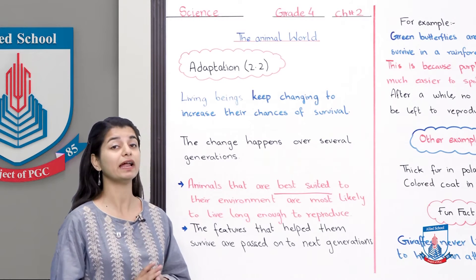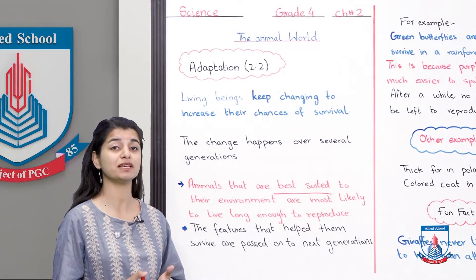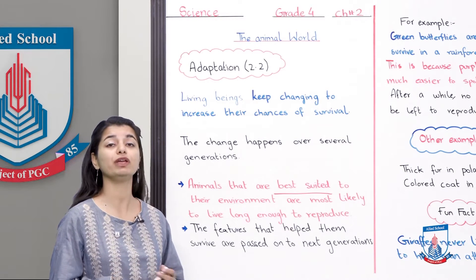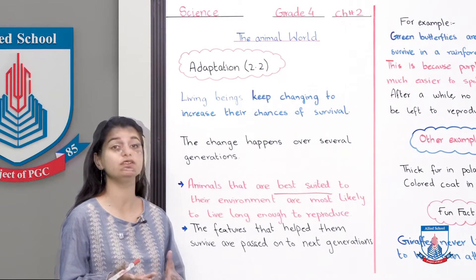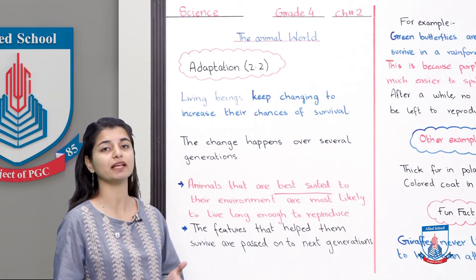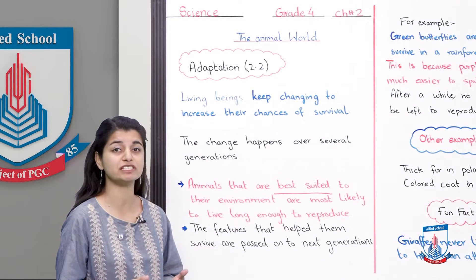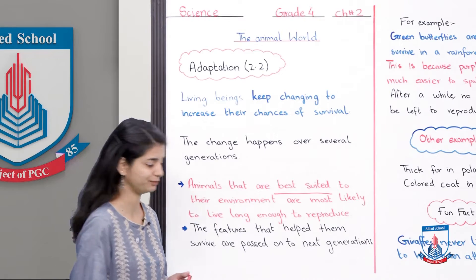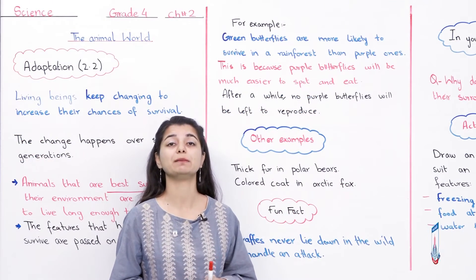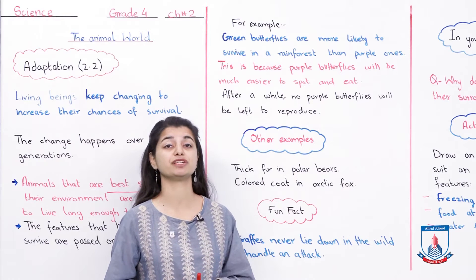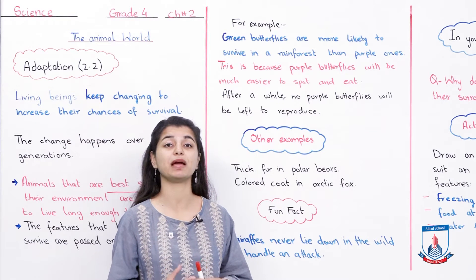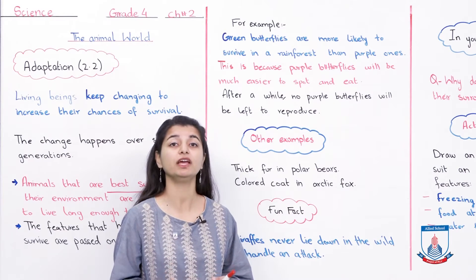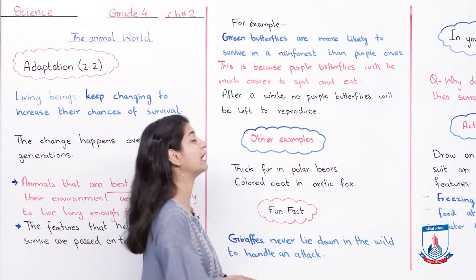So every animal changes to suit its environment, but the change happens after many generations. When the animal is adjusted to an environment which suits them, they can reproduce. In that way, the features that help them survive are carried forward. This is how animals survive through adaptation — they reproduce and pass on their beneficial features.